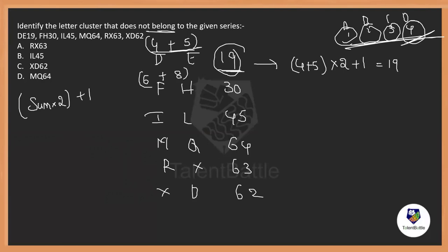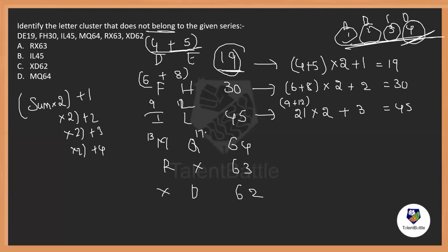Let us check this also. 6 plus 8, 14. Next one sum into 2 plus 2. So, this is 9 and 12. 9 plus 12 is 21. 21 into 2 is 42. 42 plus 3 is 45. So, perfectly correct. We are just going to do the alphabets and their numbering. And then, what did it? Into 2 plus 1, into 2 plus 3, into 2 plus 4. Like that, it is supposed to be.